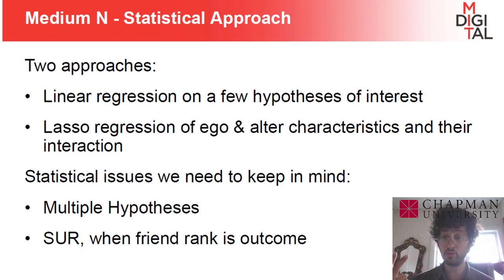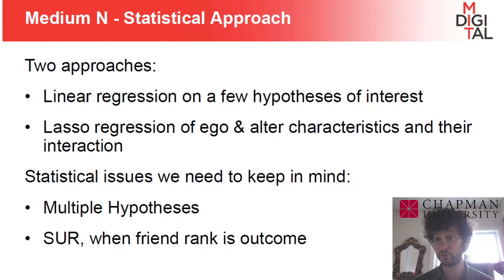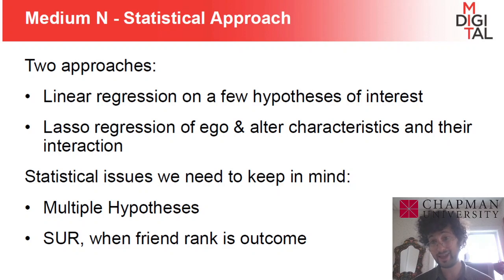We're going to use two approaches for the friend rank questions: straight OLS regressions on some subsets of the characteristics — there are obviously issues of multiple hypothesis testing and overfitting — and then one big specification where we throw everything including interactions into a pot and use LASSO to make sure that we're not overfitting.